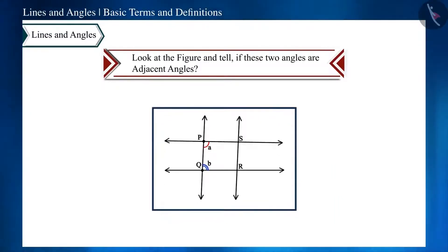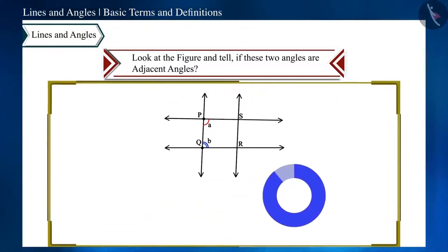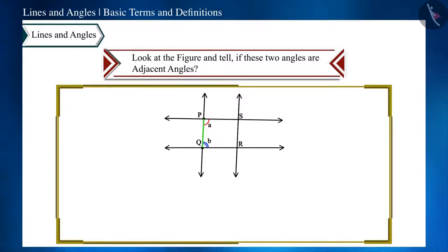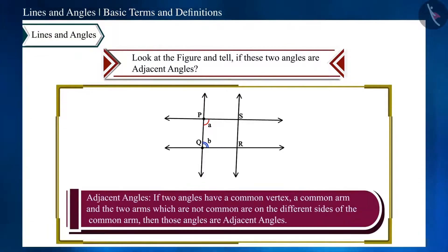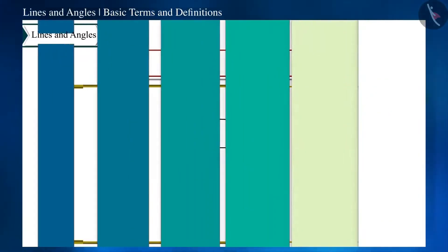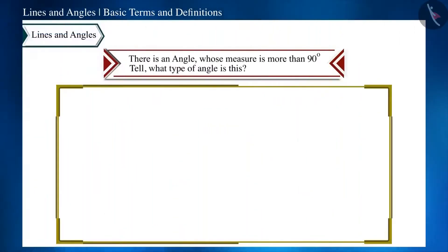Second question: are the two angles in the given figure adjacent angles? No. These two angles have a common side but different vertices. According to the definition of adjacent angles, a common vertex is required. Therefore, these are not adjacent angles.